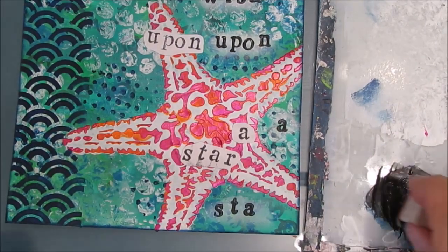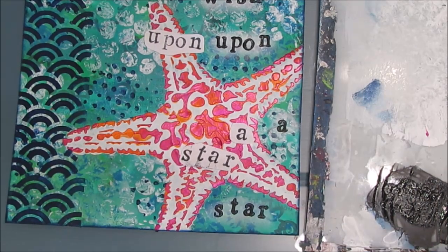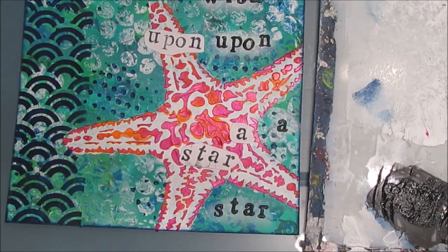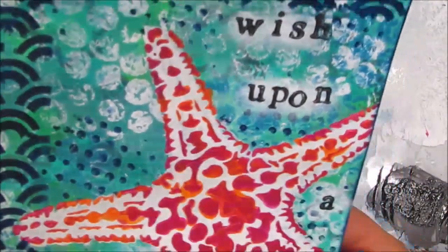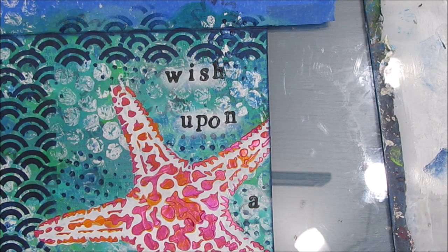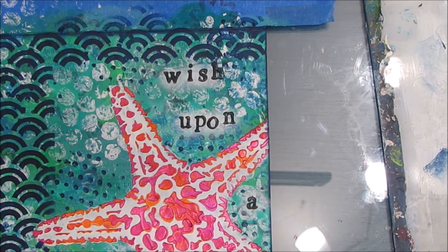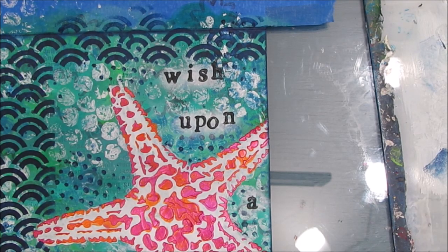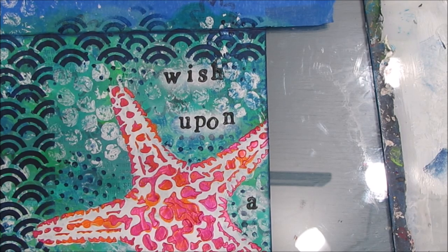As I said at the beginning, you can make this exact thing on an art journal page or on a canvas. If it's bigger than six by six, you may want to layer up a couple starfish, do a combination of some with modeling paste, some with collage papers, or some with just stenciling.